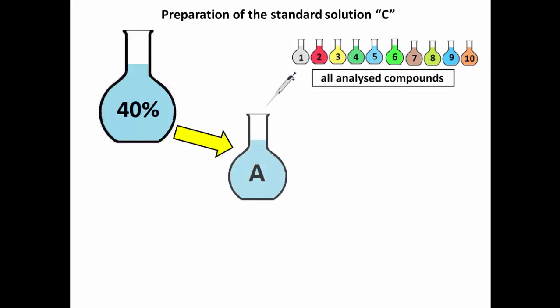The first step towards RRF calculations is gravimetric preparation of standard solution C. But in what way? Firstly, one prepares a binary water-ethanol solution with the volumetric content of ethanol equal to 40%. Then the solution A is prepared by the addition of all analyzed compounds into the initial ethanol solution. Further, it's solution C, which is prepared by the dilution of the aforementioned solution A.